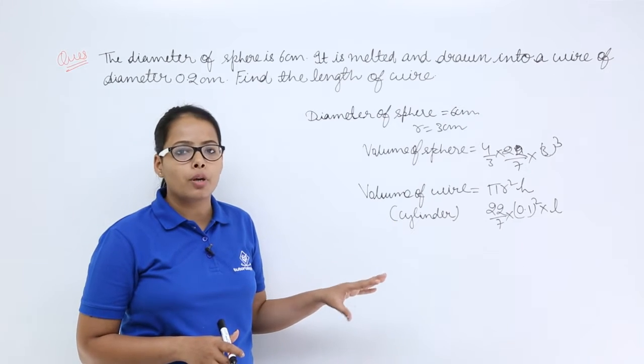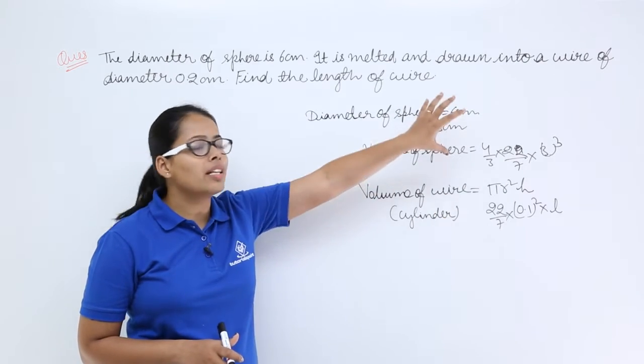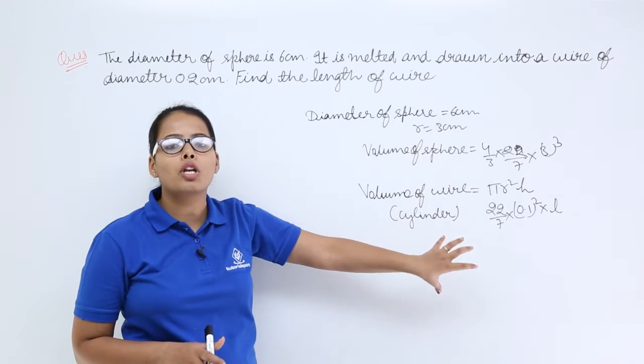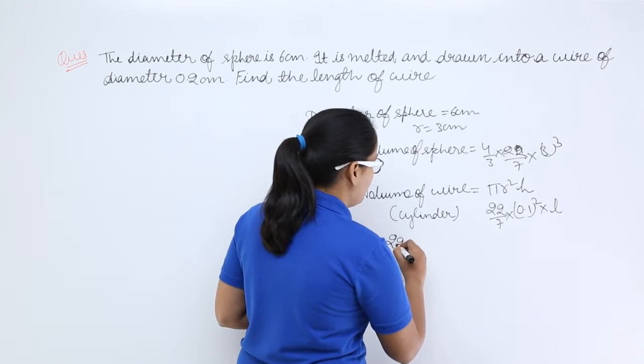Volume will remain conserved because you are using whole material into making this wire. So that's why volume of this sphere and volume of the wire will be same. So now let's equate both of them.